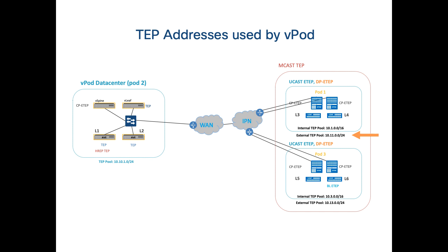The next thing is the external TAP pool, which is used by multipod and vPOD so you can translate IP addresses and carry that prefix over a public network. Most people use RFC 1918 for TAP pools, and those cannot go over a public network. You may need to bring your connection from the vPOD to the physical pod through a public network, in which case you would have to route public addresses.